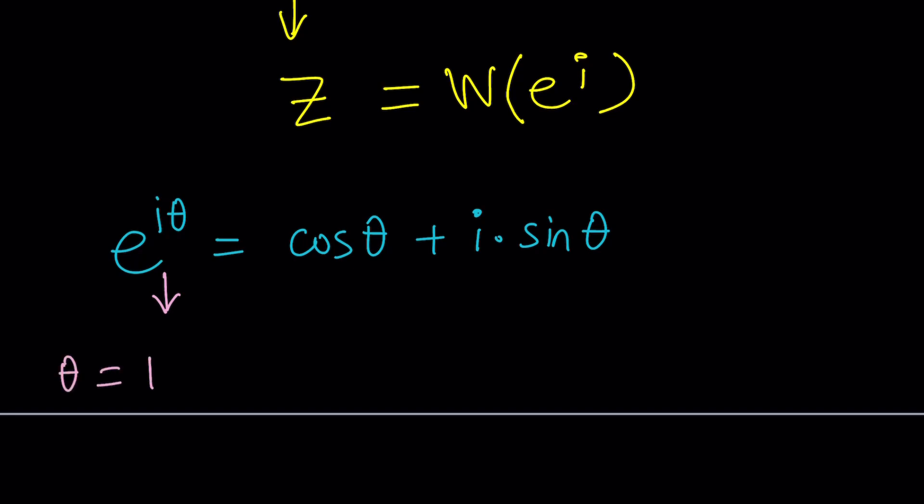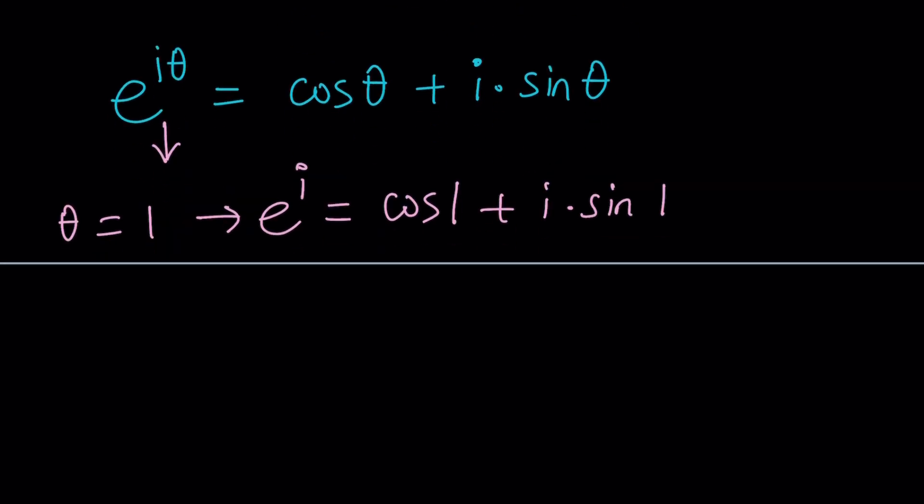But is theta measured in radians or degrees? That's a good question right? I'm going to leave that open. But if you replace theta with one then you get e to the i on the left hand side and on the right hand side you get cosine one plus i times sine one. In other words e to the i is just a complex number that can be written as a plus bi. So this is like a plus ib. Same thing right? A plus bi.